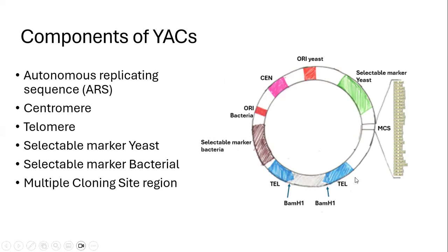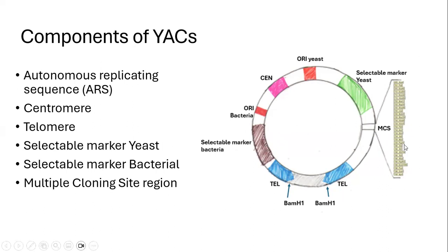They also have telomeric regions, which help protect the linear chromosomes of eukaryotes by preventing their degradation from the ends of the chromosome. They also have selection markers for yeast as well as for bacteria. Bacterial selection markers majorly include antibiotic resistance genes. I will discuss the yeast selection markers shortly. We also have a multiple cloning site region that contains a collection of unique restriction enzyme target sites which can be used for the cloning reaction.